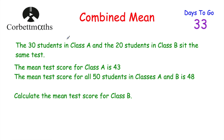This time we've got another combined mean question. We're told there are 30 students in class A and 20 students in class B, and they sit the same test. The mean test score for class A is 43, and the mean test score for all 50 students in classes A and B is 48. We've been asked to work out the mean test score for the students in class B. Feel free to press pause and try this question.